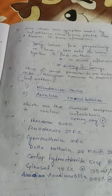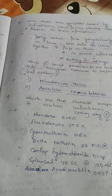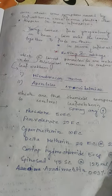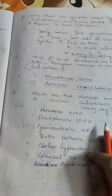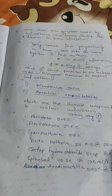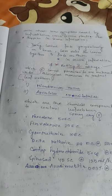Damage symptoms caused by leaf webber on cruciferous plants: young larvae feed gregariously on leaves, then web the leaves together and feed on them. In severe infestation, rotting of cabbage heads occurs.